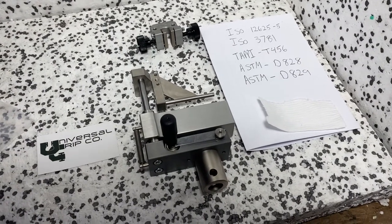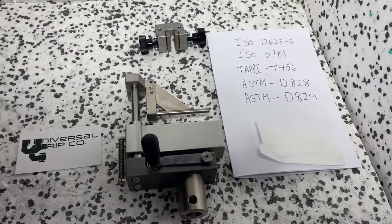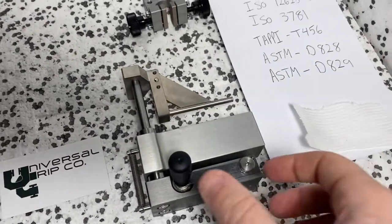Hello everyone. Today we are showing the ASTM D828 fixture for testing bath tissue and toilet paper that's become wet.